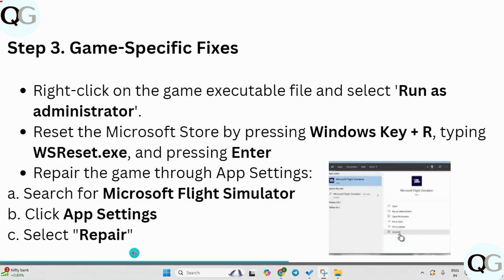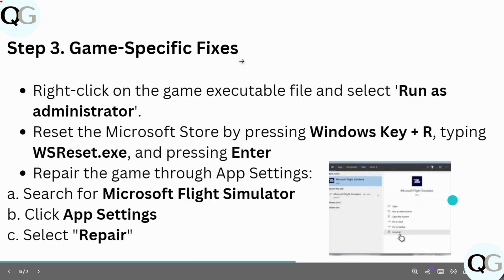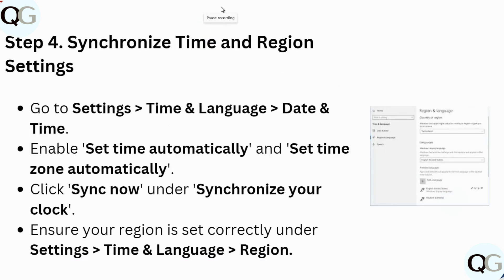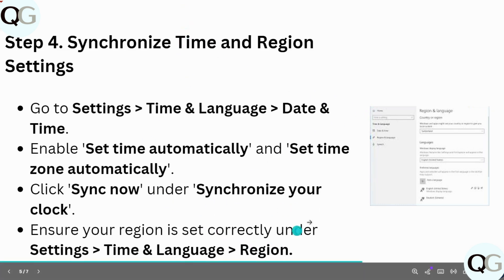After this, synchronize your time and region settings. Go to Settings, then Time & Language, select Date & Time, enable 'Set time automatically' and 'Set time zone automatically', then click 'Sync now'. Under synchronize your clock, ensure your region is set correctly under Settings → Time & Language → Region.